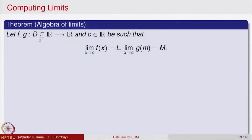Let me state the first one, which is called the algebra of limits. Algebra of limits for functions is very much similar to algebra of limits for sequences. Suppose f and g are two functions defined in a domain D in R, and c is a point in R such that the limit of f(x) as x goes to c exists and is L, and limit of g(x) as x goes to c is M. So the limit of both f and g exists as x goes to c — one is L and the other is M.